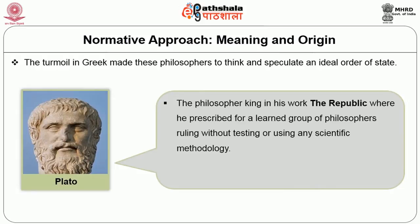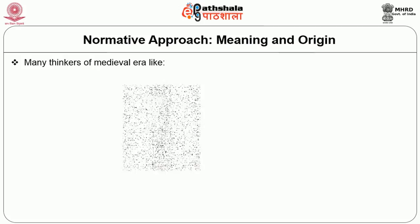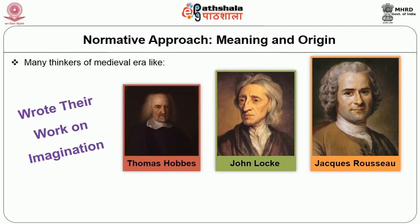Plato devised the philosopher king in his work The Republic, where he prescribed a learned group of philosophers ruling without using any scientific methodology. Plato's state was not existing — it was in the philosopher's imagination only. Many thinkers of the medieval era like Thomas Hobbes, John Locke, Rousseau wrote works which were primarily based on their imagination and expectation, colored with their experiences of the existing situations; hence their works were a flight from reality.